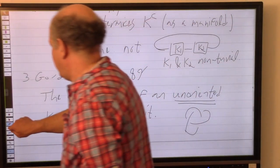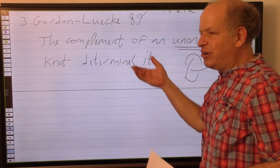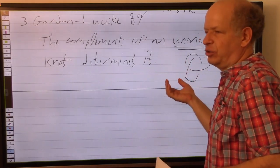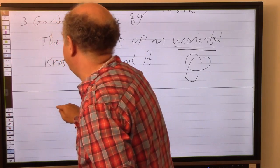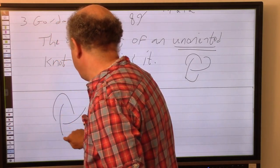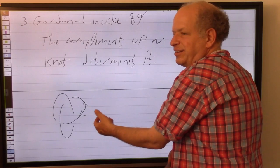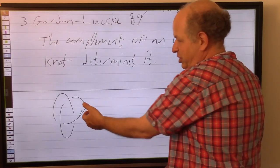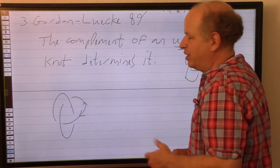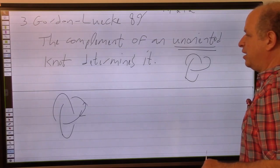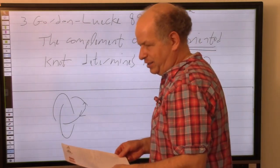So the fundamental group is a strong invariant. But I should also give a few counterexamples. Clearly the fundamental group on its own cannot detect orientation, because it's the fundamental group of the complement, and the complement doesn't see the orientation of the knot.